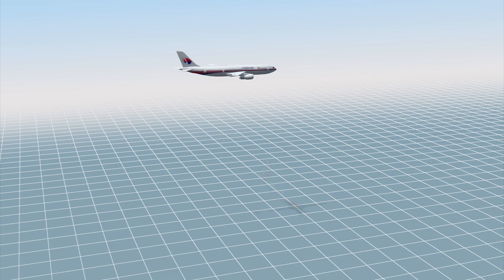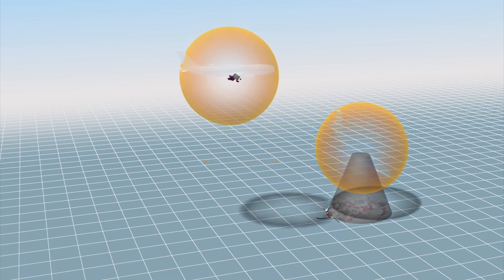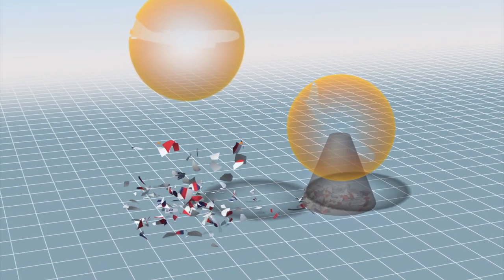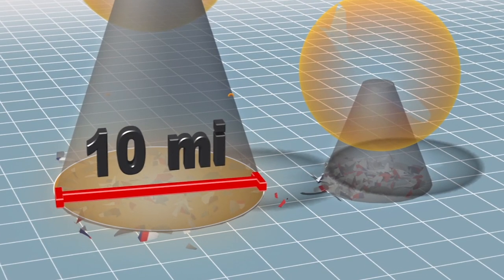If the explosion had occurred at a lower altitude, the debris would have been spread over a smaller area. An explosion at high altitude would see the debris spread over a large area, as was the case with Flight 17, which had a debris field roughly 10 miles across.